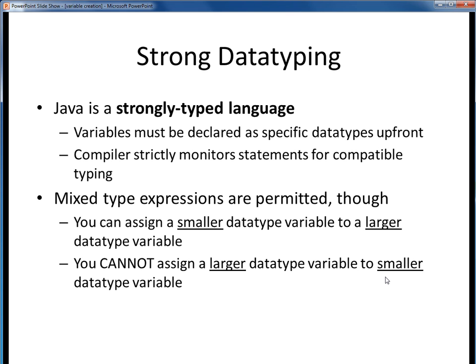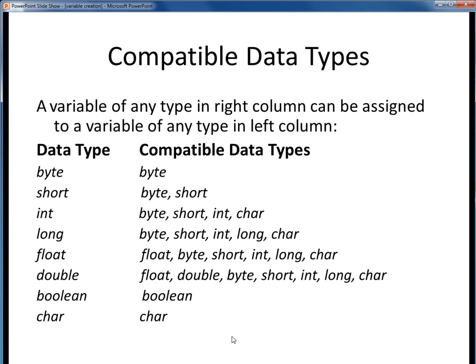For example, a long-sized integer can easily accommodate a byte-sized integer, but you could not safely assign a long to a byte integer. Here is a full list of compatible data types in Java. Variables of any data type on the right can safely be assigned to variables of the data type on the left. For example, a 4-byte int can safely accommodate a 1-byte byte, a 2-byte short, or another int, as well as even a 2-byte char, but it cannot accommodate a long because a long is 8 bytes. Similarly, because a double is the largest numeric type, it can hold any of the other numeric types. However, booleans can only contain boolean values, and chars can only hold other char values. And with that, we end this segment on variable creation.